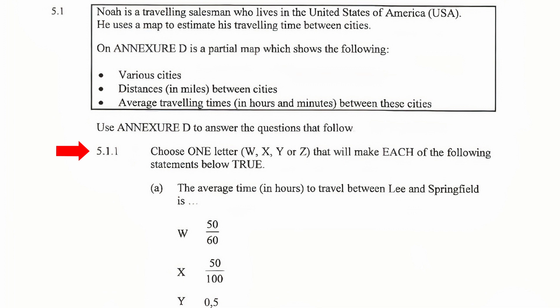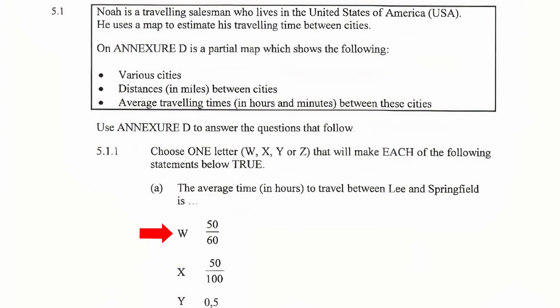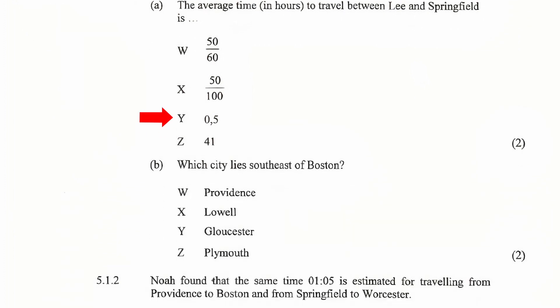5.1.1: Choose one letter — W, X, Y, or Z — that will make each of the following statements true. (a) The average time in hours to travel between Lee and Springfield is: W) 50 over 60, X) 50 over 100, Y) 0.5, or Z) 41.